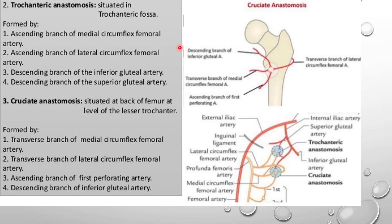Only the inferior gluteal artery contributes here. The fourth branch forming the cruciate anastomosis is the ascending branch of the first perforating artery, which is also a branch of the profunda femoris artery. These four branches together contribute to the formation of the cruciate anastomosis.